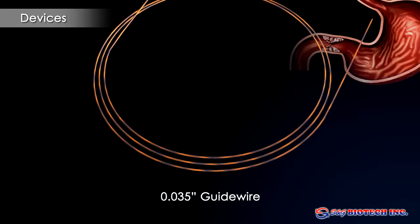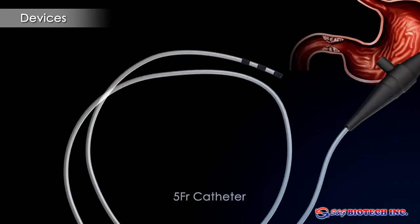If a duodenoscope is used, long ERCP wires are required. A sufficiently long catheter, ideally an ERCP catheter, is required. A sphincterotome allows additional directional control over the guide wire.